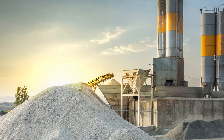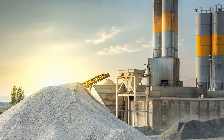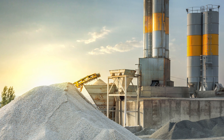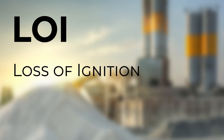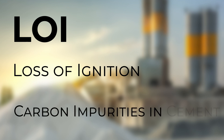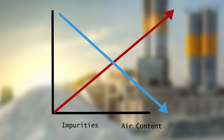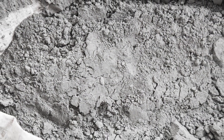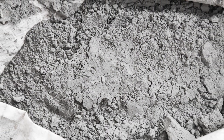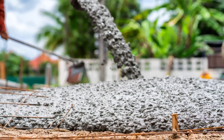Second is cement content. Higher cement contents will result in higher variation of air content. This is due to the LOI content of cement. LOI stands for loss of ignition, but the easiest way to think about it is carbon impurities in cement. As the impurities go up, air content will fall. Therefore, if you have high cement mixes, you will be more susceptible to these variations.